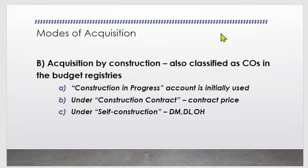On December 8, Entity A pays the final billing after applying 10% retention and withholding tax, same as before: debit Accounts Payable; credit Guarantee/Security Deposits Payable; credit Due to BIR; credit Cash-MDS Regular. Since the building is now 100% complete, the CIP account is reclassified: debit Buildings ₱40,000,000; credit Construction in Progress—Buildings and Other Structures ₱40,000,000.